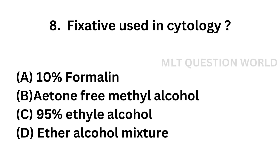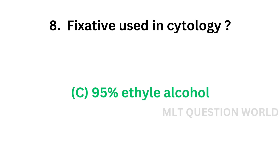Question number eight: Fixative used in cytology — Option A: 10% formalin, Option B: Acetone-free methyl alcohol, Option C: 95% ethyl alcohol, Option D: Ether alcohol mixture. The correct answer is Option C — 95% ethyl alcohol. Fixative used in cytology is 95% ethyl alcohol.